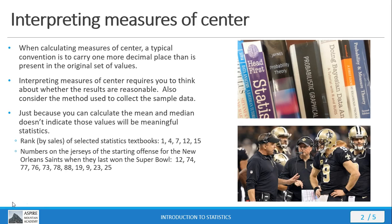Here's another example: the jersey numbers of the starting offense for the New Orleans Saints when they last won the Super Bowl. Again, this is numerical data, but it's not quantitative data — it's categorical data, because each of these jersey numbers is like the name for a unique individual. You can take a mean value and a median value, but when you go to translate that back into the real world, what does that mean? Nothing. Just because something numerical allows you to calculate the mean and the median value, don't be fooled into thinking that those values will have any sort of real world significance. The only measure of center that has any meaning with categorical data is the mode, and that's it.